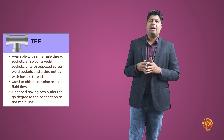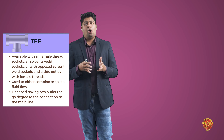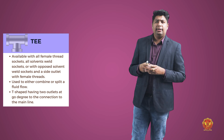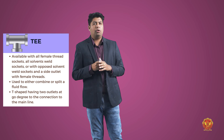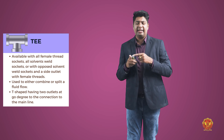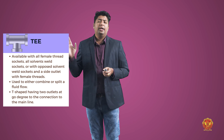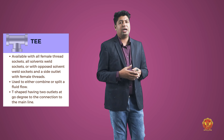T-fitting — जब आपको direction भी change करनी हो और number of connections भी increase करने हों, तो हम T को use करते हैं। यह female thread socket या solvent weld socket के साथ available होती है। जैसे एक straight direction में जाना हो और एक 90-degree या 45-degree direction में जाना हो — ऐसे में T को use कर सकते हैं। Straight channel भी बना रहता है और बीच में से एक और line pass करनी हो तो T use होती है।